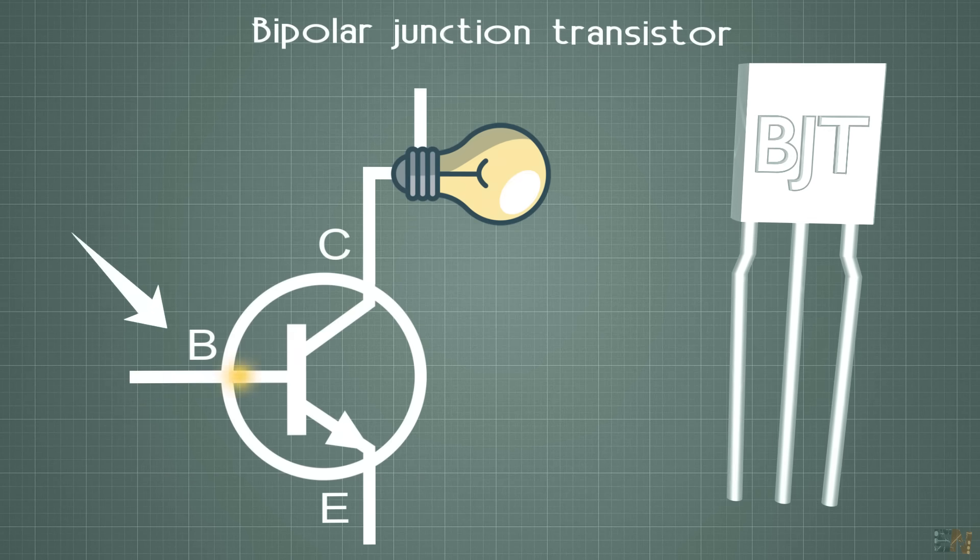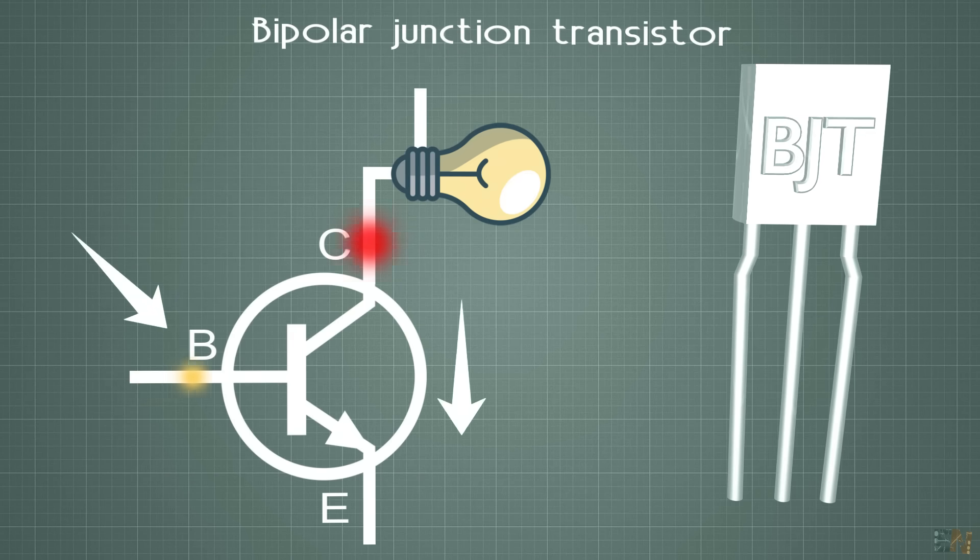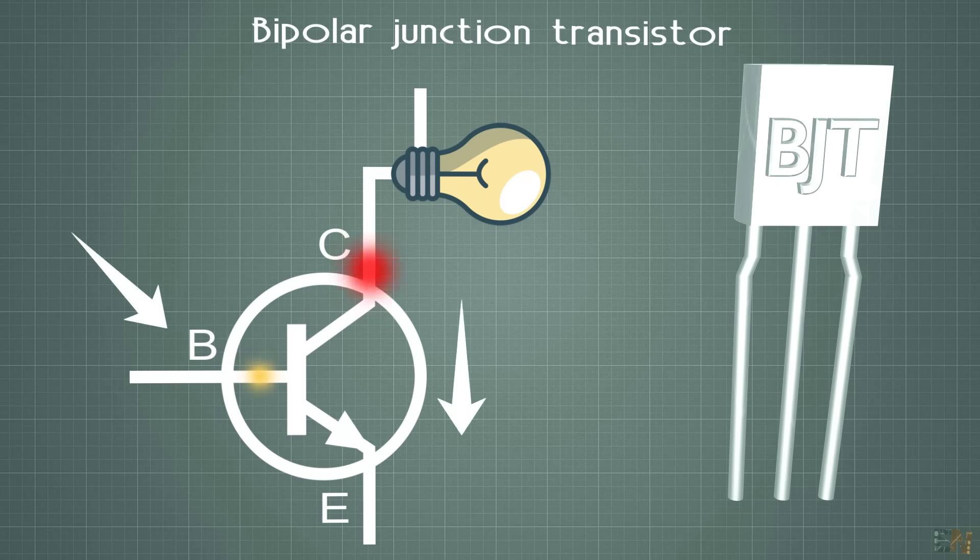We apply a very small current to the base and the bigger current flow will be between the collector and the emitter and that's why we use the BJT.